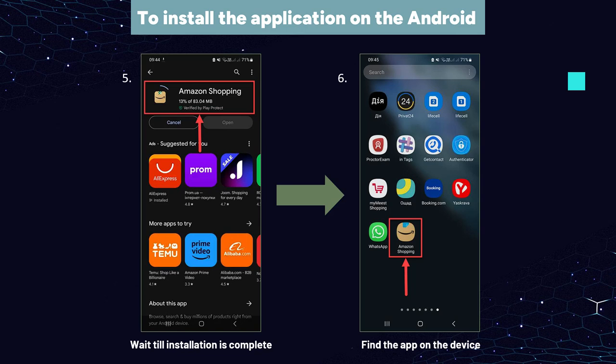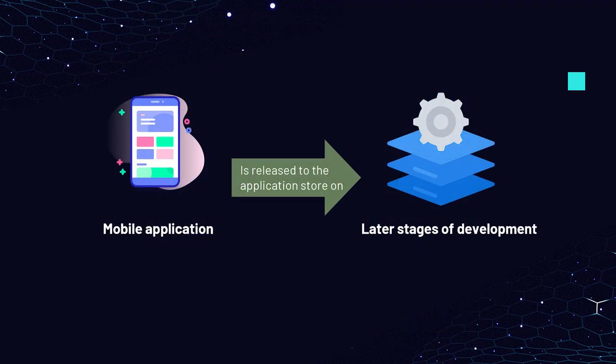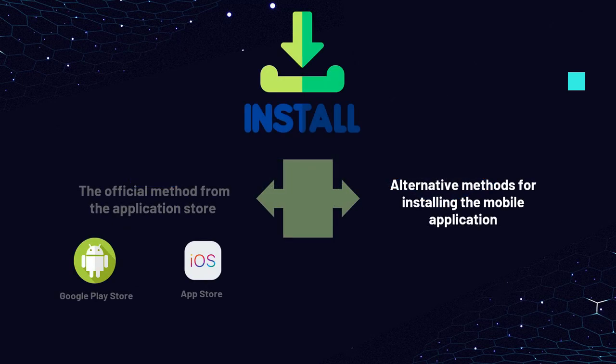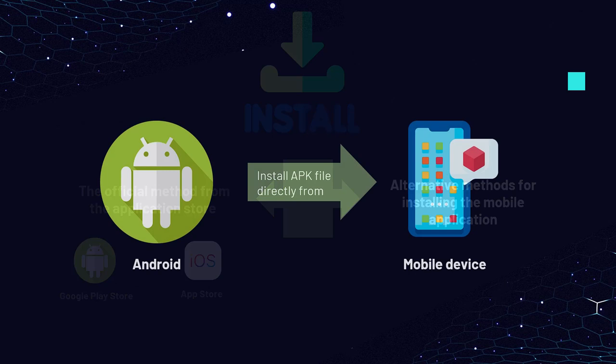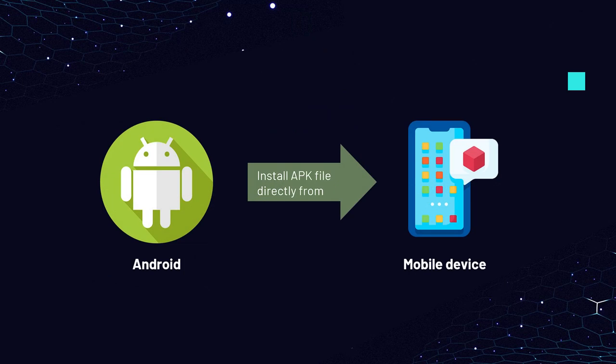However, during the development process, usually the application is released to the application store in the later stages of development. Therefore, developers and testers use alternative methods for installing the application on the device. On Android, installing the APK file using an alternative to the application store method is easier than doing so with IPA files on iOS. On Android devices, you can upload the APK file with the application directly on the device and install it.